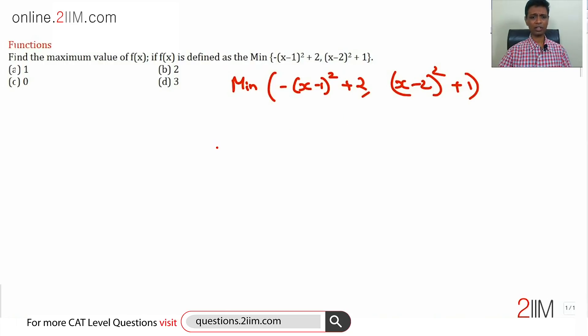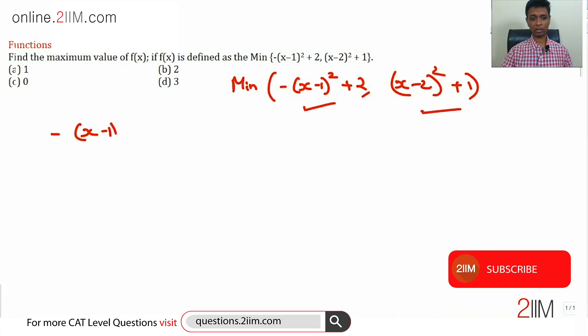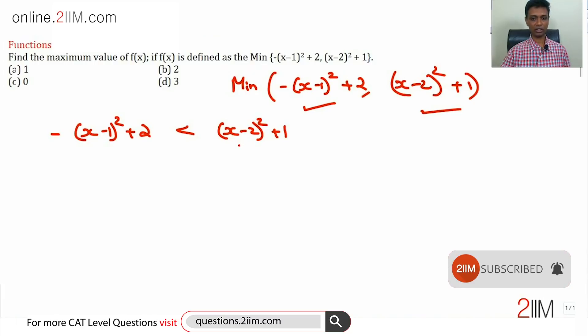First, let us find out when f(x) would be each term. When will f(x) be this term, when will it be this term? We are solving for -(x-1)² + 2 less than (x-2)² + 1. Wherever this is satisfied, the first term will be the minimum; wherever it is not satisfied, the second term will be the minimum.